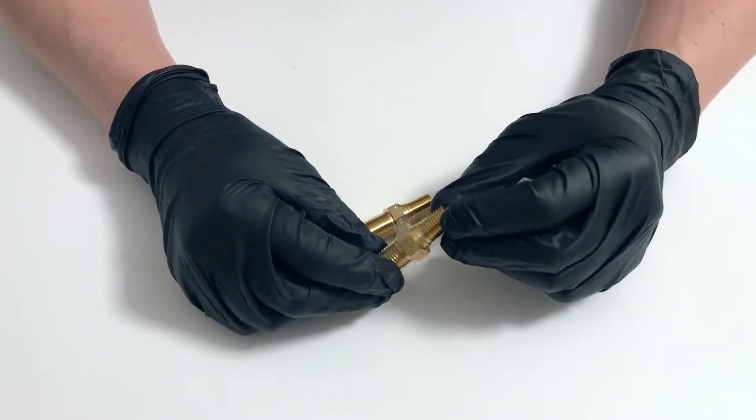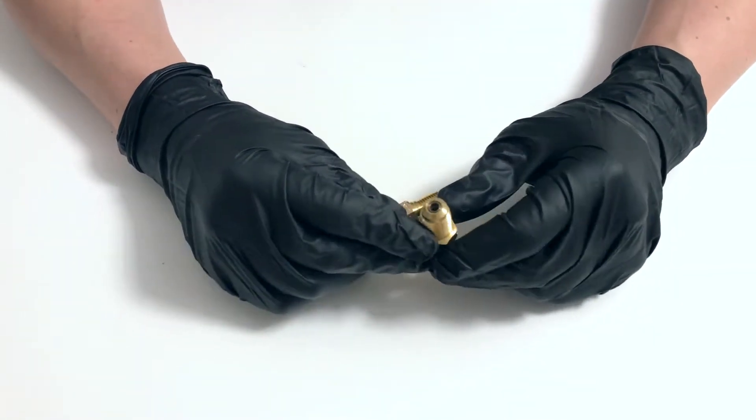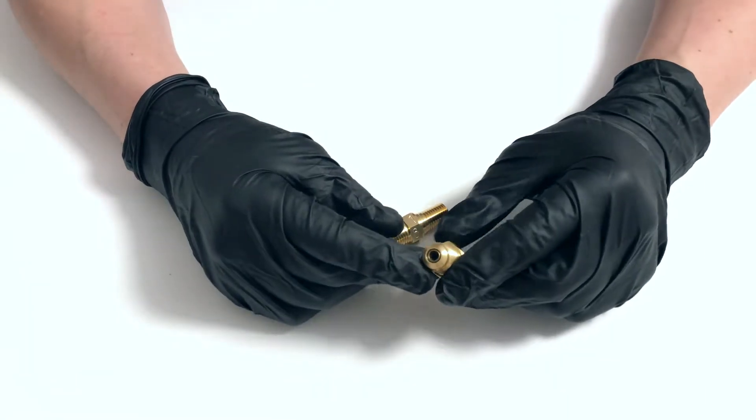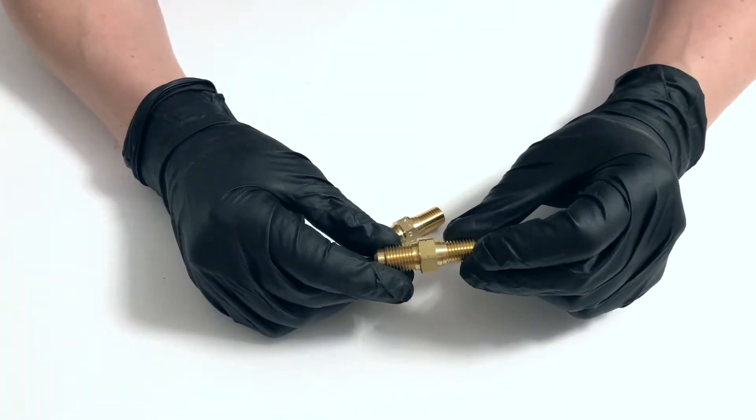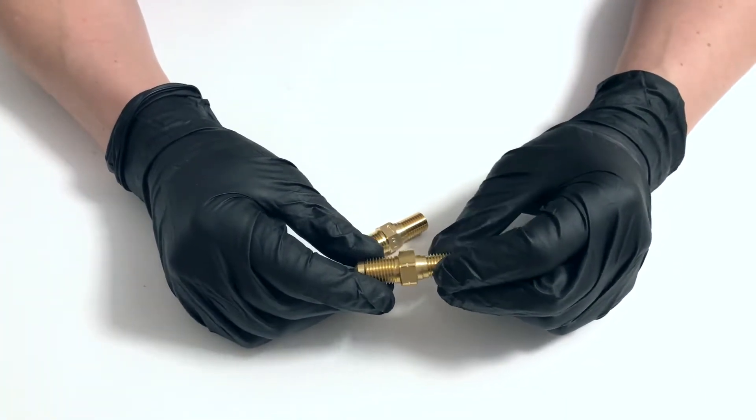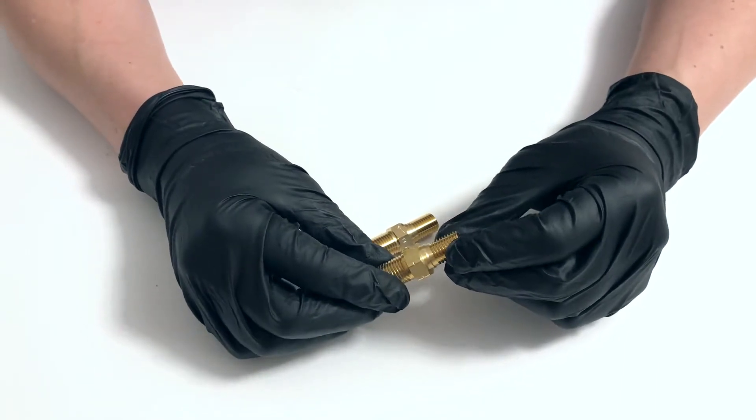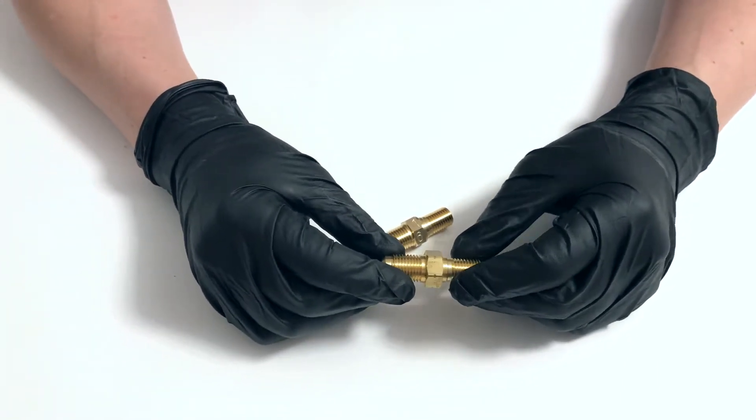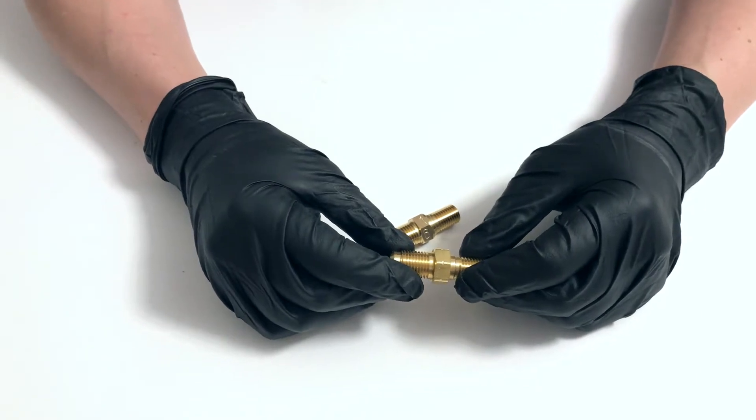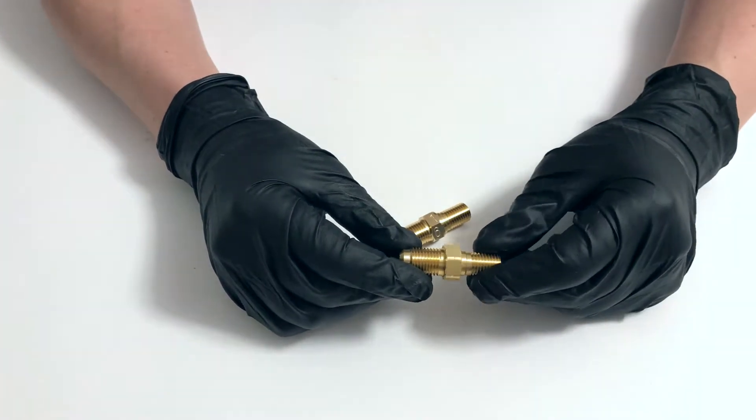These valves are used on the high pressure circuit of the fuel system, installed on the fuel rail. They're set to release fuel back into the low pressure circuit at a set fuel pressure measured in bar.